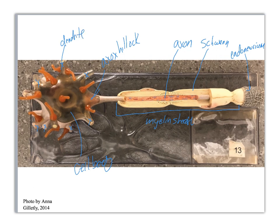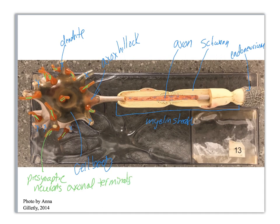Now I'm going to change colors to green. All of these green things are presynaptic neurons — axonal terminals. That's where people get confused the most often: the difference between a dendrite and the presynaptic axonal terminals, which are the presynaptic neurons that are synapsing with this postsynaptic neuron.